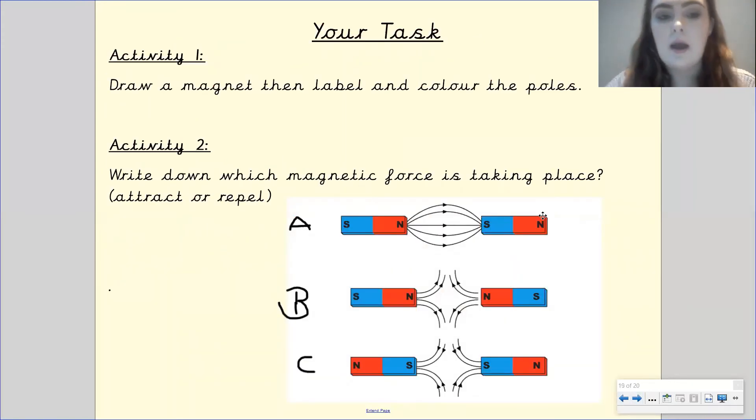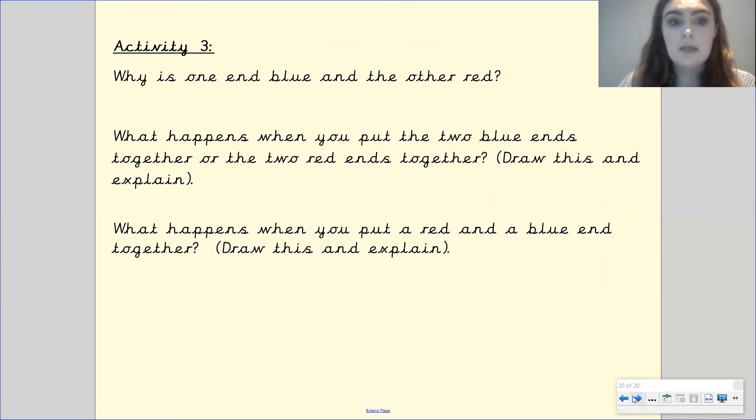So your task. You can pick one of the activities. Please make sure that you choose the one that is best suited to you. So activity number one. You need to draw a magnet and then label and colour the poles. Activity number two. You need to write down which magnetic force is taking place. Is it attracting or repelling? So here you've got A. Is this attracting or repelling? Now what I would like for you to do is draw out this diagram and then tell me if it's attracting or repelling. B. Is it attracting or repelling? Draw out the diagram and tell me what it's doing. And C. Draw out the diagram and tell me what it's doing. Now activity number three.